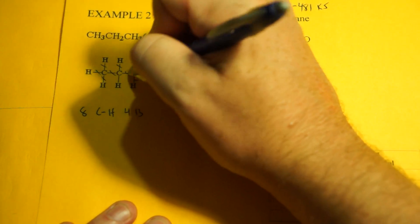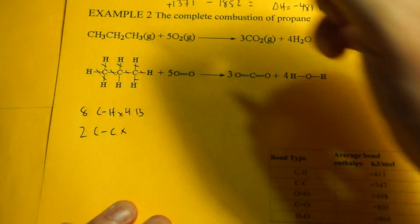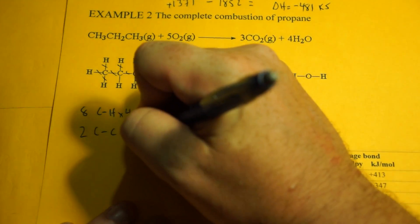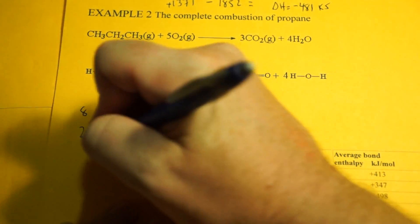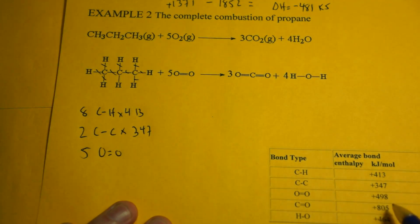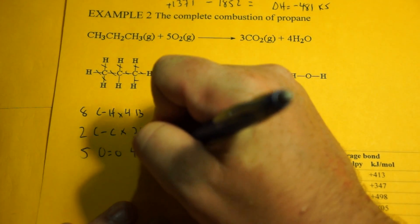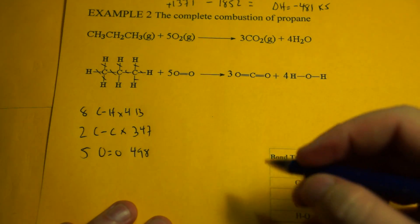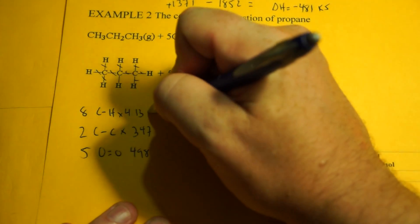We have 2 CC bonds, and that's going to be 347. And 5 oxygen double bonded. And what does it say here? 498. That's interesting. The other one was 499. All right, whatever.